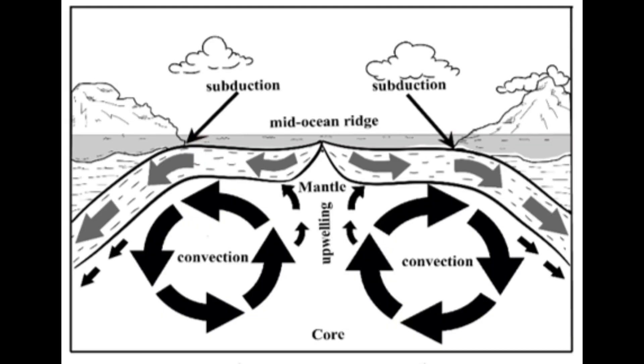This picture shows a convection cell. As you can see, warm material rises and the cool material sinks. These cool materials will eventually turn to land formation.